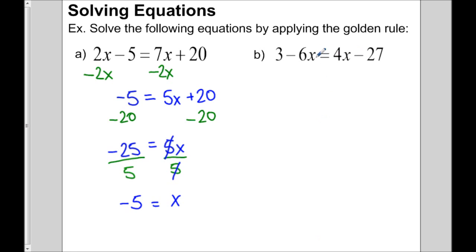In the last example, we have negative 6x on one side and 4x on the other. The smaller one is actually negative 6x, because negative 6 is a lesser value than positive 4. So we get rid of the negative 6x by adding 6x, and we add 6x to both sides.